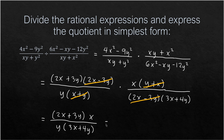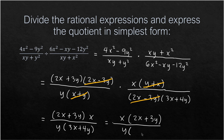With no more common factors, we write the answer: X(2X + 3Y) over Y(3X + 4Y). We can also write monomials first: X(2X + 3Y) over Y(3X + 4Y). That is the simplified form for this example, and that concludes the division of rational expressions.